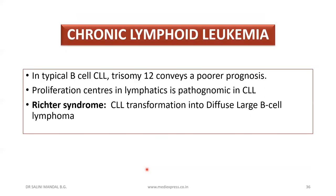Chronic lymphoid leukemia (CLL) presents in typical B-cells. Trisomy 12 confers a poorer prognosis. Cytogenetics: deletion of 13q14 or deletion of chromosome 11. Proliferation centers in lymph nodes are pathognomonic for CLL. Richter syndrome refers to transformation of CLL into diffuse large B-cell lymphoma.